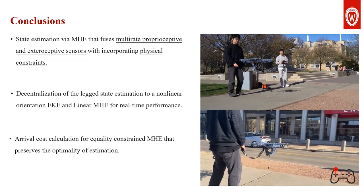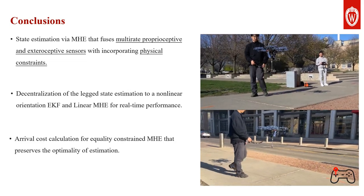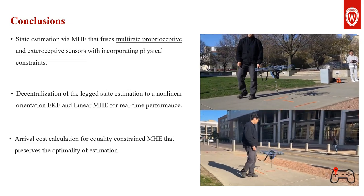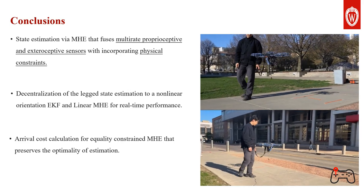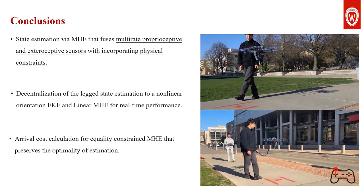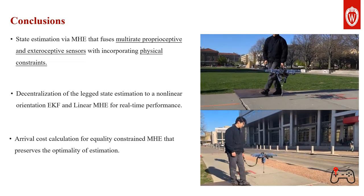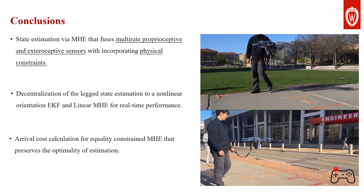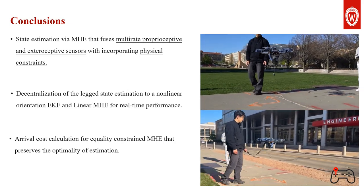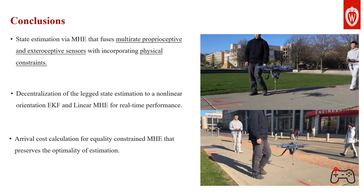In conclusion, in this paper we proposed an estimation framework using MHE that fuses multi-rate proprioceptive and exteroceptive sensors while incorporating physical constraints. We achieved decentralization of the legged state estimation to a nonlinear orientation EKF and a linear MHE with real-time performance. We compute the arrival cost for equality-constrained MHE that preserves the optimality of the estimation.